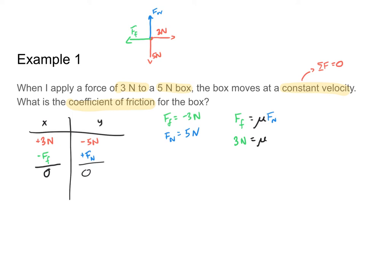Three newtons is equal to mu times five newtons. I'll solve for mu by dividing by five newtons, and I get that mu is equal to three-fifths, or 0.6. You'll notice I don't have any units after mu, because the frictional force and the normal force have the exact same unit — those newtons cancel out, leaving mu to be unitless. Mu is one of the only things in physics where you don't have to give a unit because it has none. So mu for this problem is 0.6.